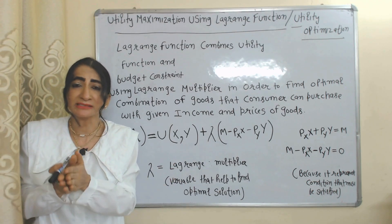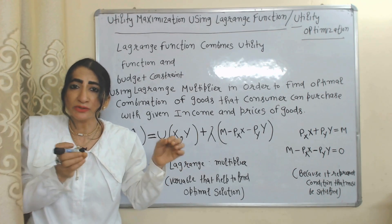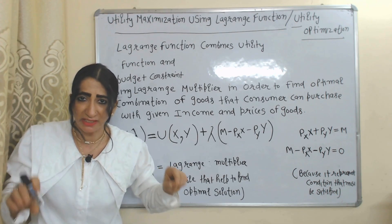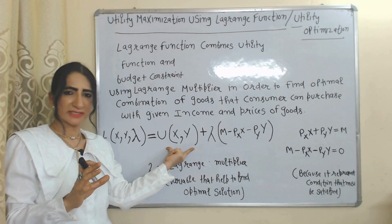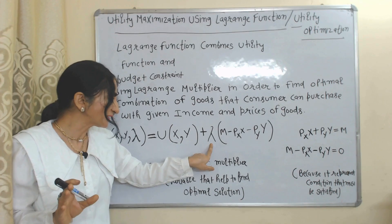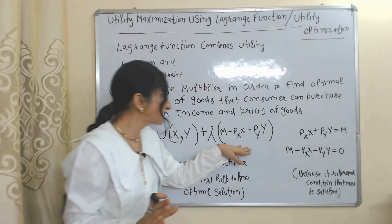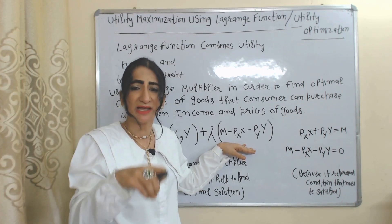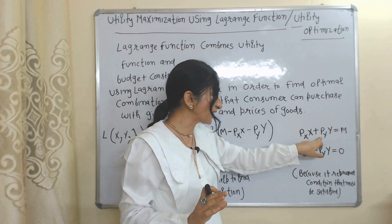The Lagrange function combines the utility function and budget constraint by using the Lagrange multiplier in order to find out the optimum combination that a consumer can buy with given income and prices of goods. We can write the Lagrange function like this: the first part represents the utility function — U represents utility, x and y represent quantities of x and y goods, and lambda represents the Lagrange multiplier. Lambda is a variable that helps to find the optimum solution. The second part represents the budget constraint, which shows the limitation on goods and services a consumer can buy with given income and prices.